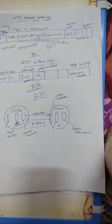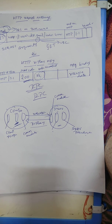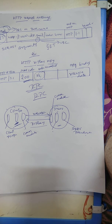Finally, the most important concept: the server stub procedure unmarshals the arguments in the request message, calls the corresponding service procedure, and returns the reply message. This is called the RPC concept. These are all the topics for today's class.